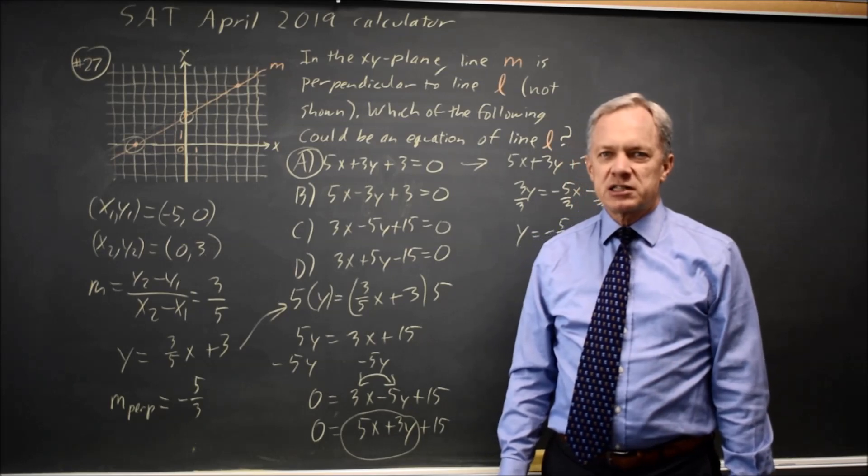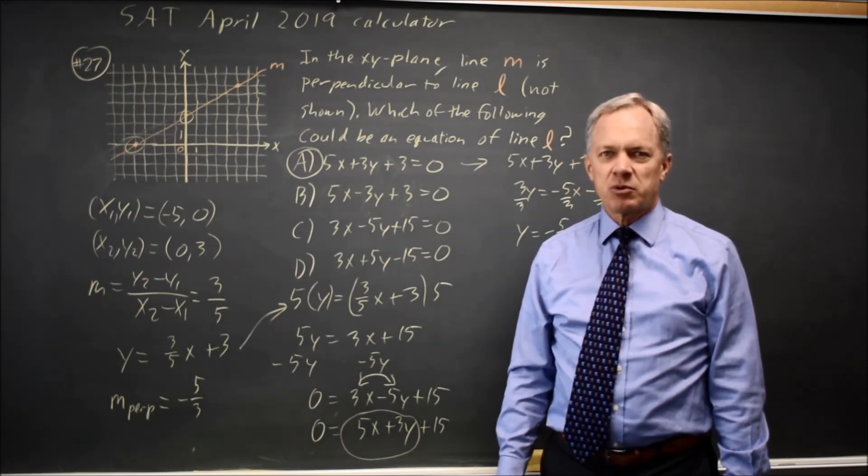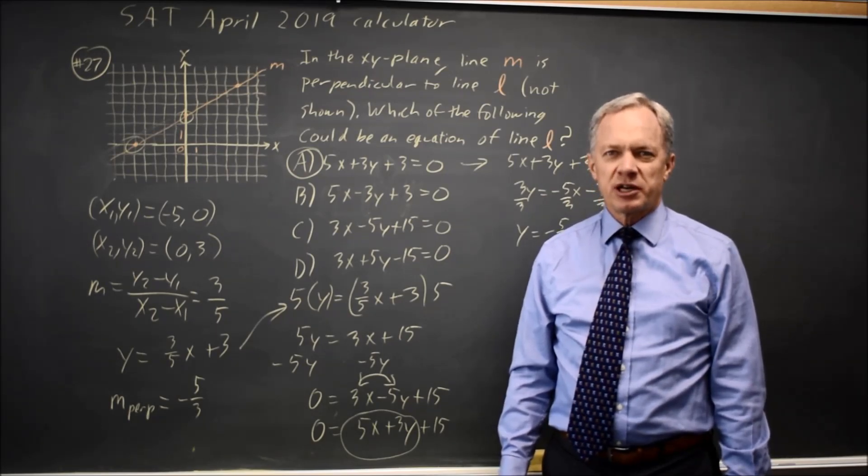It's often faster to write in standard form and swap the coordinates and flip the sign, if you remember that. But we're often safer with y equals mx plus b slope-intercept form, because we have a lot of practice with that.